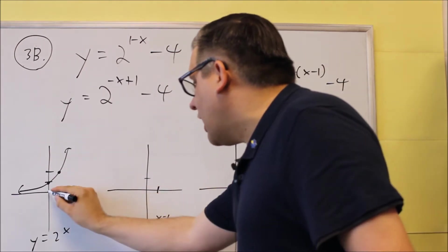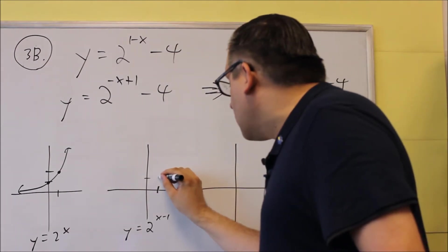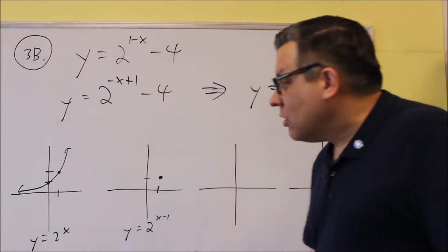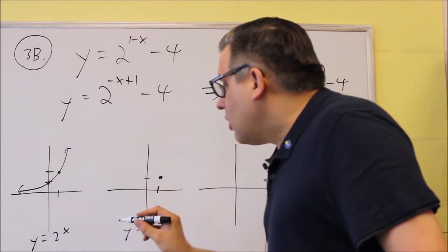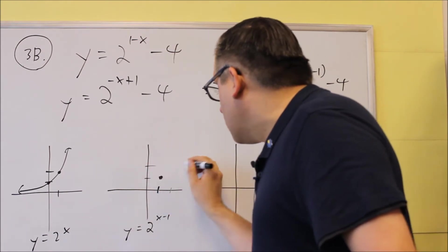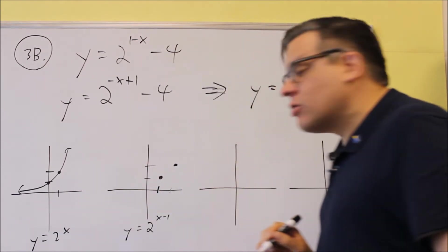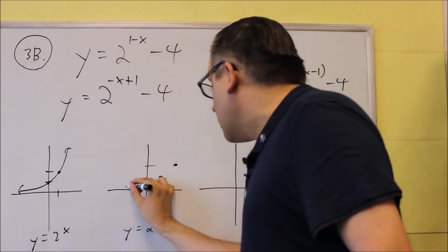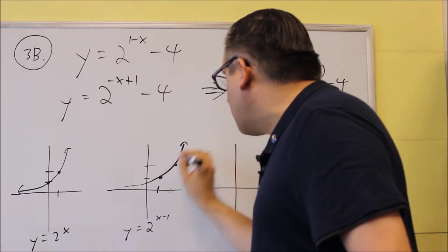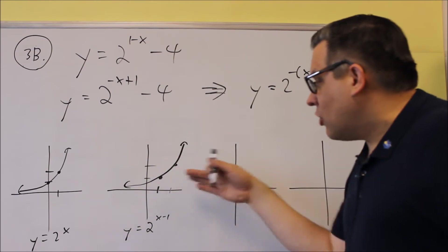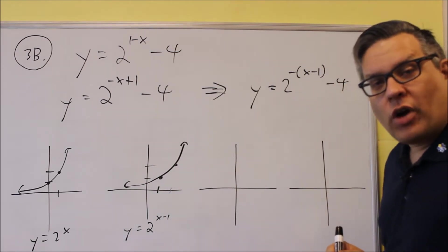So all these two points here get shifted over 1 to the right. So what was originally at 0, 1 is now going to be at 1, 1. What originally was at 1, 2 is now going to be at 2, 2. So now the graph is going to look something like this for the next one. It got shifted over one place to the right.